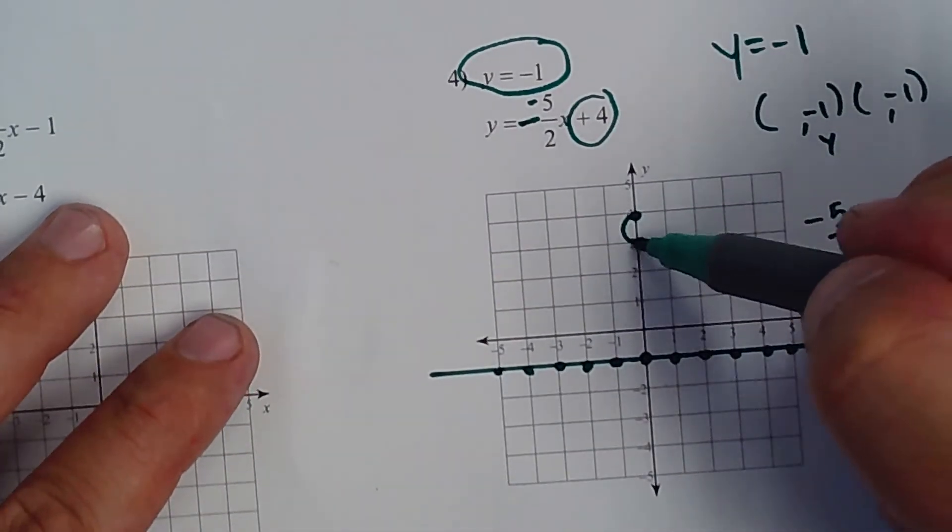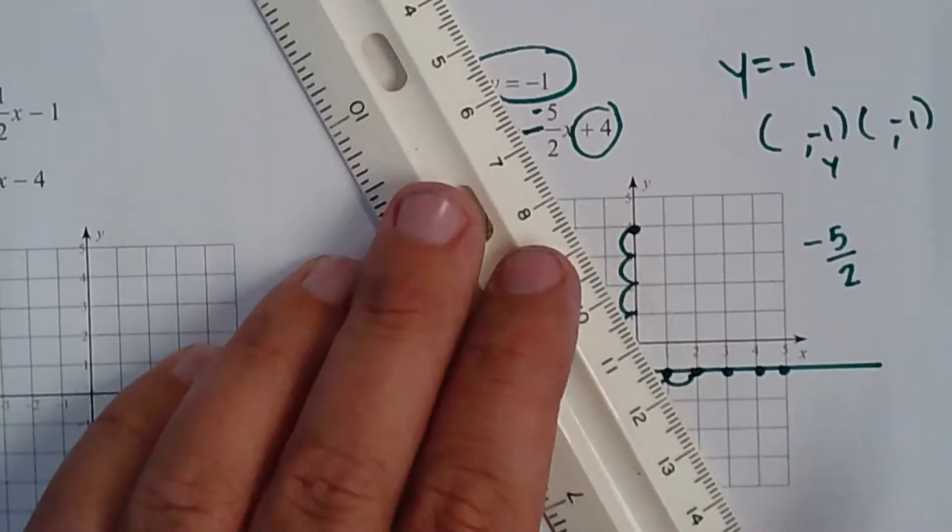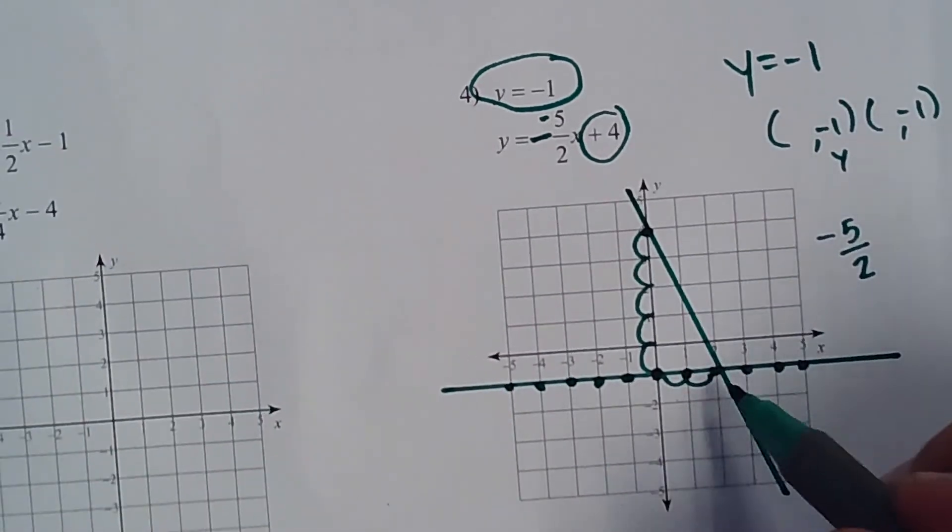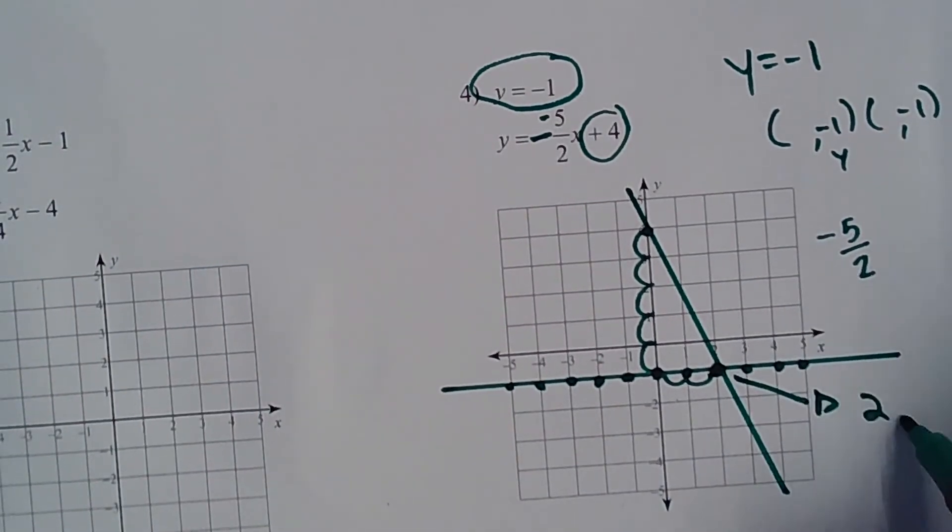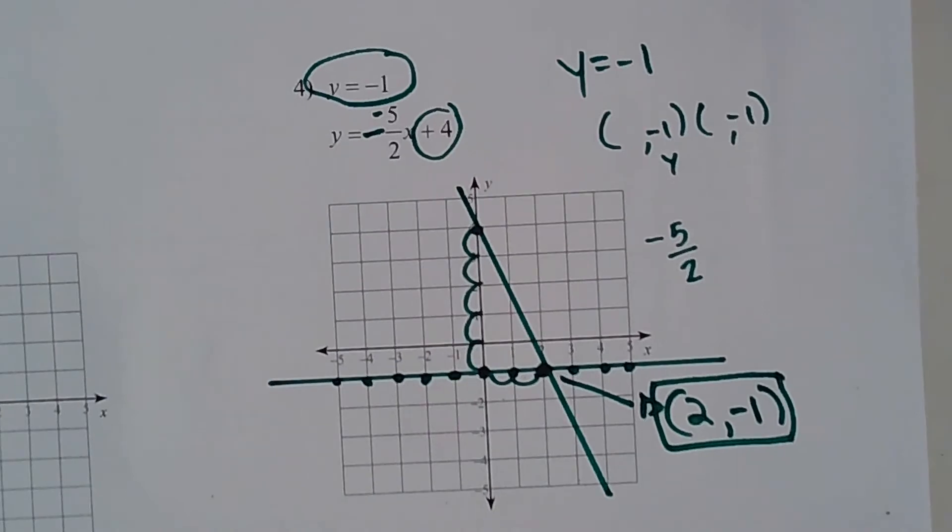You're going to go down 5. 1, 2, 3, 4, 5, over 1, over 2, and your line, your point's going to be right there. And you can see, if I drew my line perfectly straight, that the answer is over 2, down 1. Oh, my bad. There you go. Over 2, down 1.